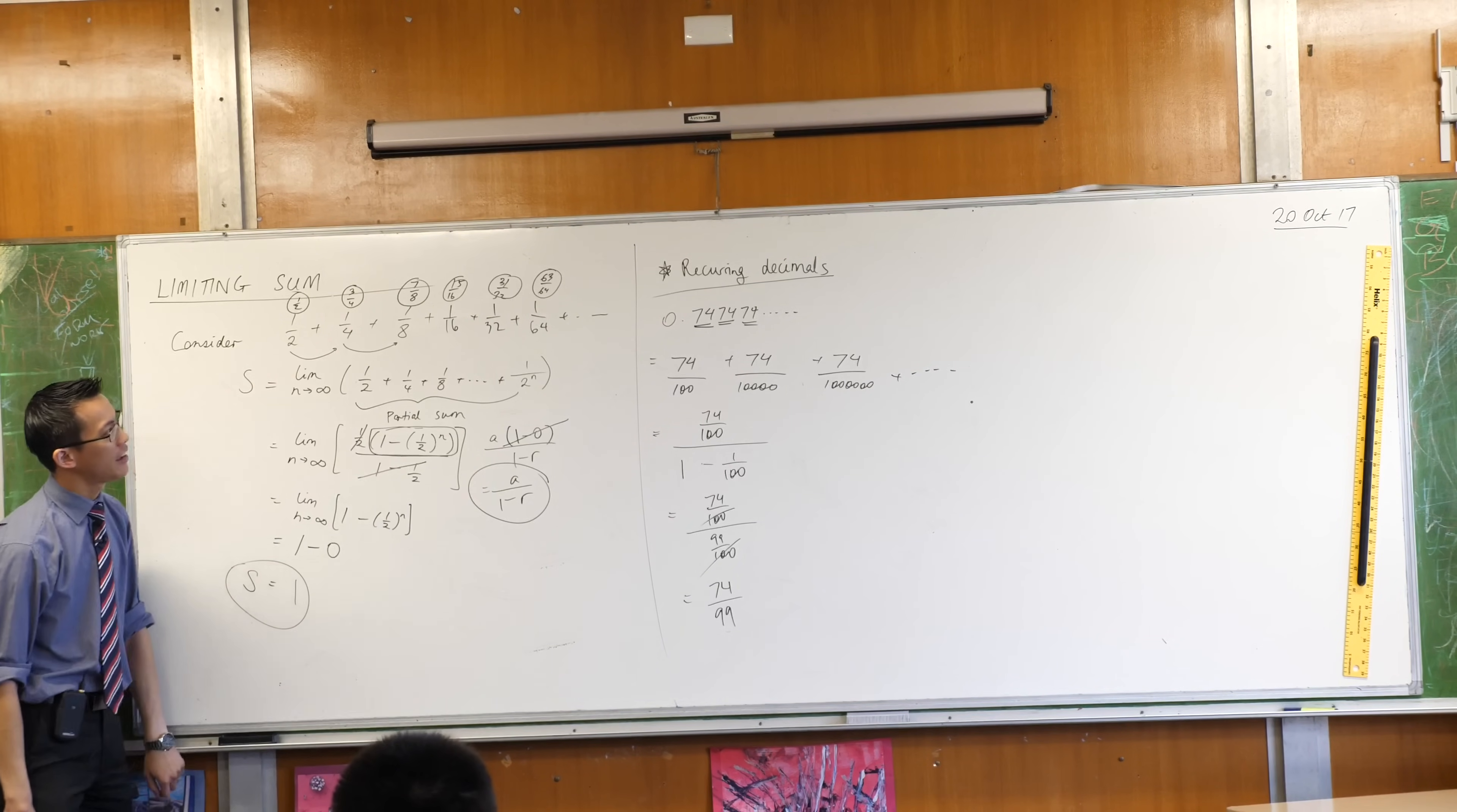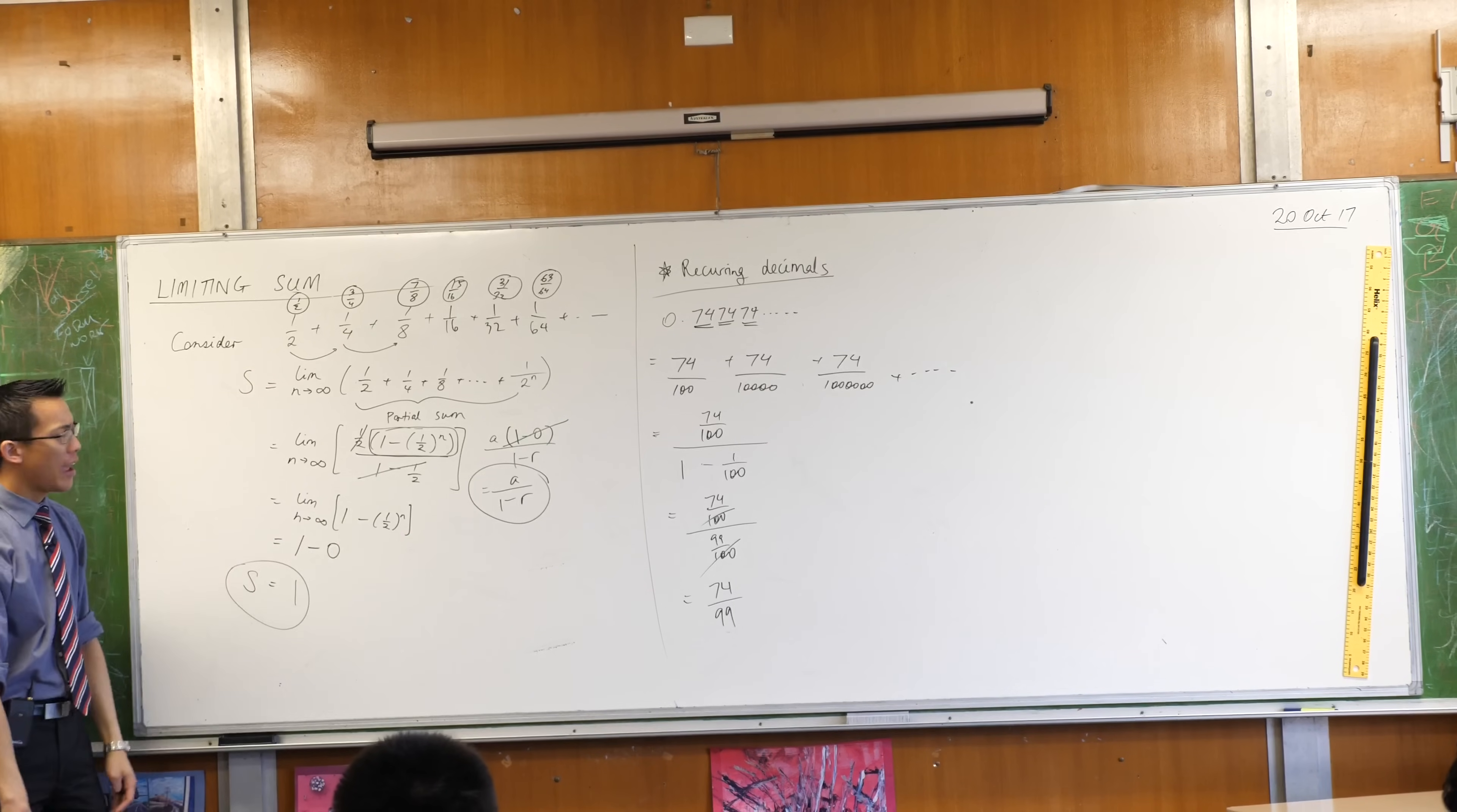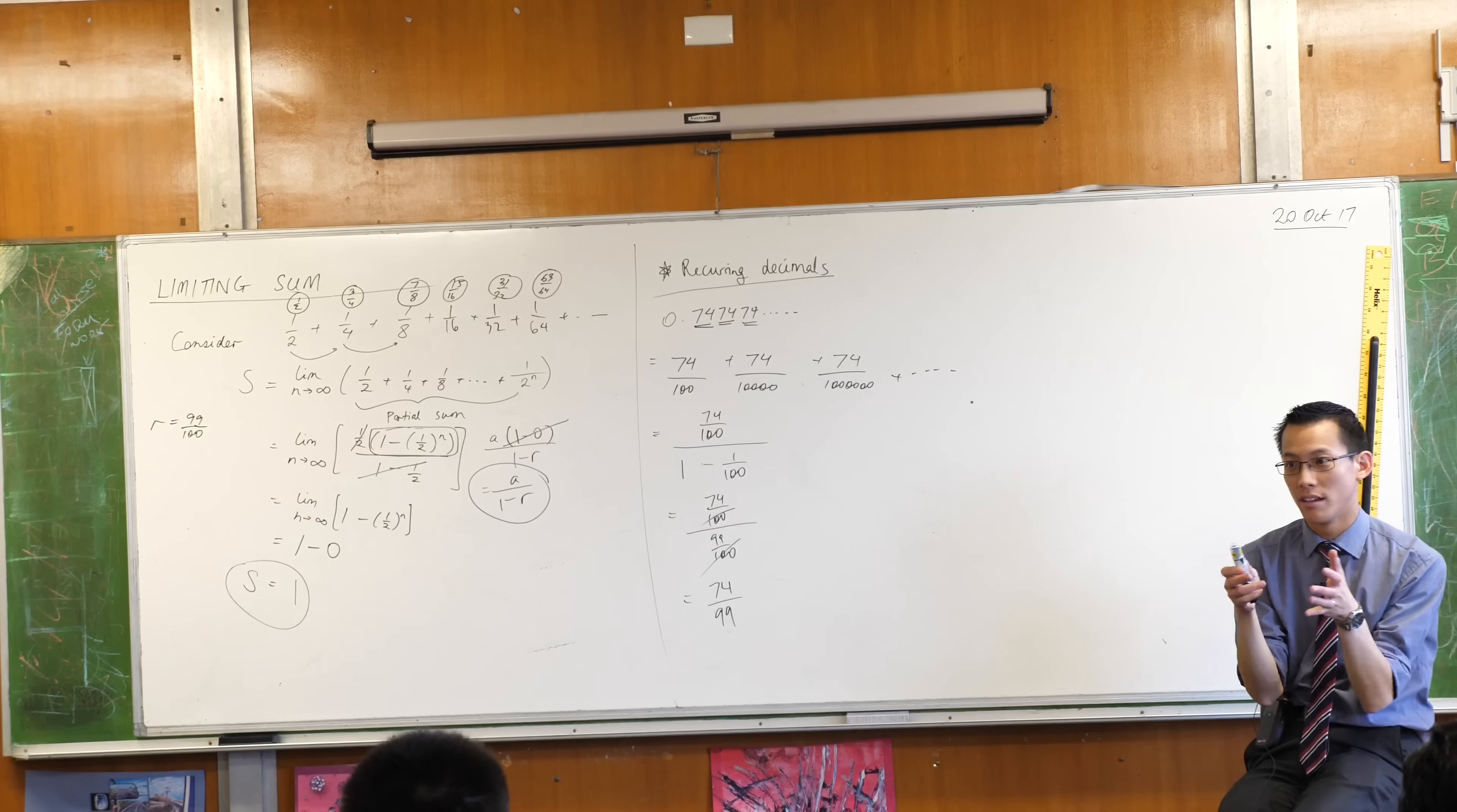So, in summary, when you've got a GP and when its ratio is making numbers smaller rather than making them bigger, even if it doesn't really so, suppose the ratio is this. Right? 99 over 100. Every time you multiply 99 over 100 by itself, it gets smaller, doesn't it? A little bit, but it gets smaller.